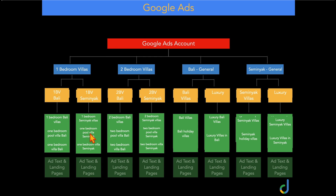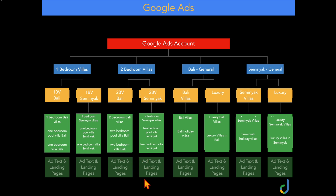This structure is powerful and highly increases conversion rates because you can target different ad copies which relate to specific search terms and send users to the most relevant landing page. If someone searches for a one-bedroom villa they go to the one-bedroom landing page; a two-bedroom villa search goes to that page. You can also quickly pause underperforming ad groups — for example, pausing two-bedroom Bali if two-bedroom Seminyak converts better — which is much harder with all keywords in one ad group.